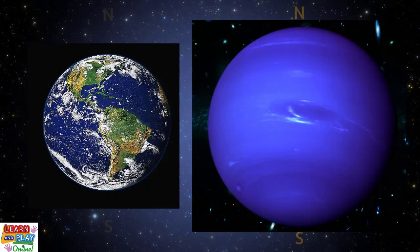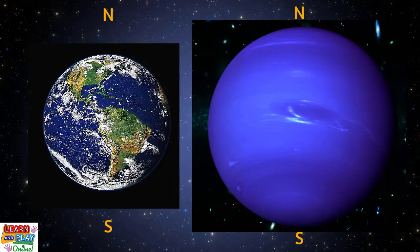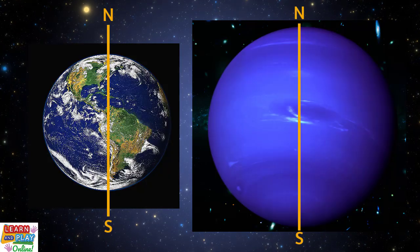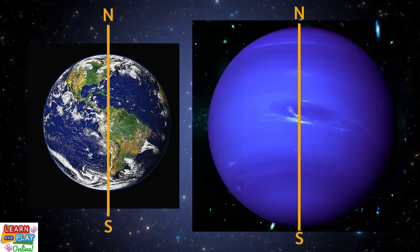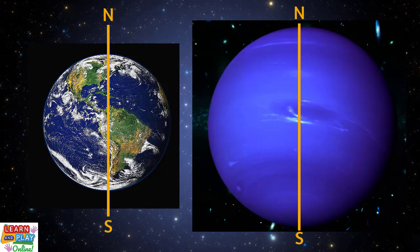All planets have a north and south pole, and they all rotate on their axis. What is an axis? Imagine a line passing through the center of the planet, with each end indicating the north and south poles. That is the axis on which the planet rotates.